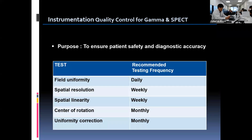Let's move on to today's subject. The quality control testing on instruments should be performed thoroughly to ensure patient safety, efficiency, and diagnostic accuracy. Through the QC procedure, we can identify equipment problems before they affect clinical patient studies, and it is important to verify that all camera calibration is up to date. This table shows the list of major QC tests and optimal testing frequency.